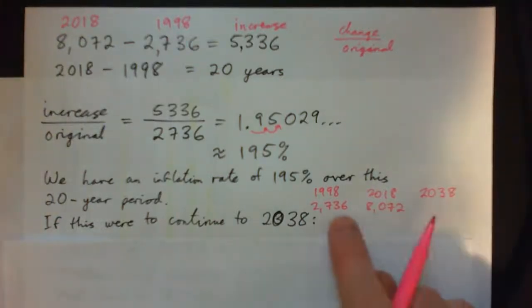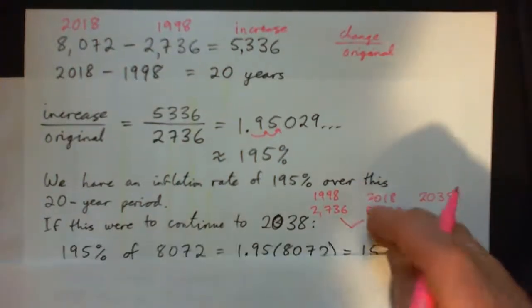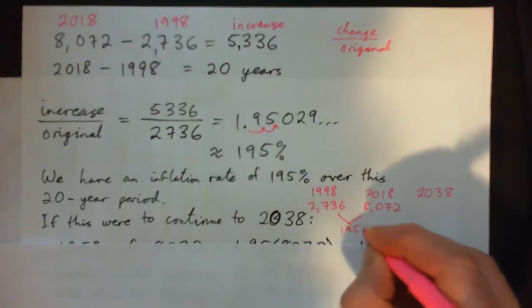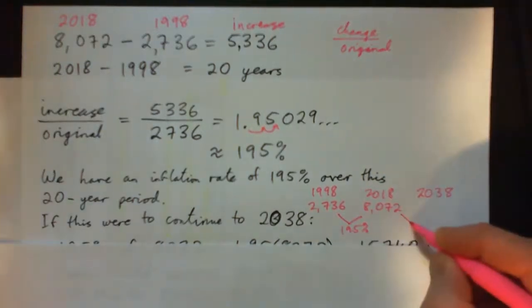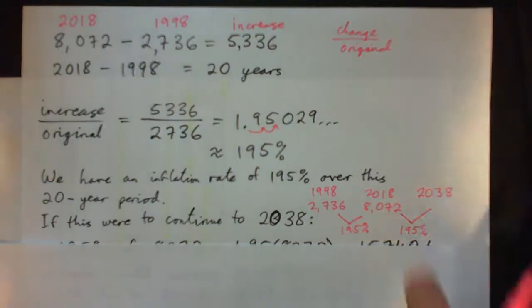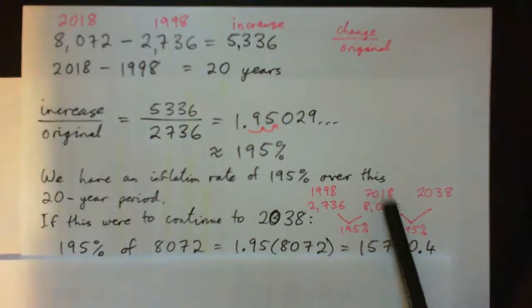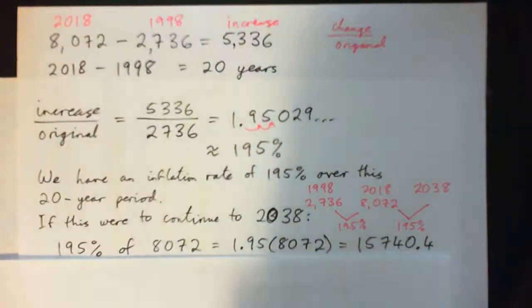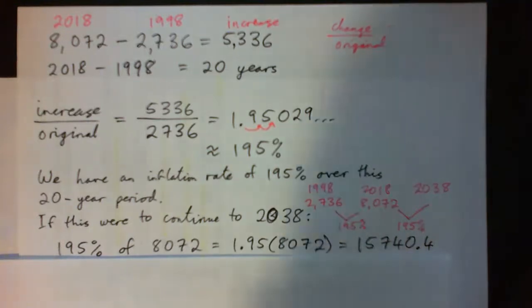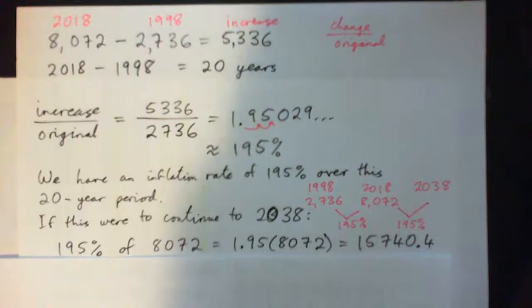So what's it going to be? Here the increase is 195 percent. That's $5,336. So we're going to say if it continues this way, it'll increase by another 195 percent from 2018 to 2038. So we get 195 percent of what it was in 2018. That's 1.95 times 8,072 and that gives us about 15,700.